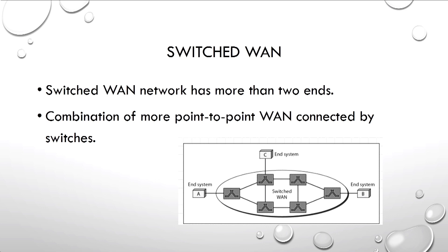Next is switched WAN. Switched WAN helps you connect two or more nodes through switches. A switched WAN network has more than two endpoints. The combination of multiple point-to-point WANs connected by switches is called switched WAN. Any number of end-point devices can be interconnected through switched WAN.